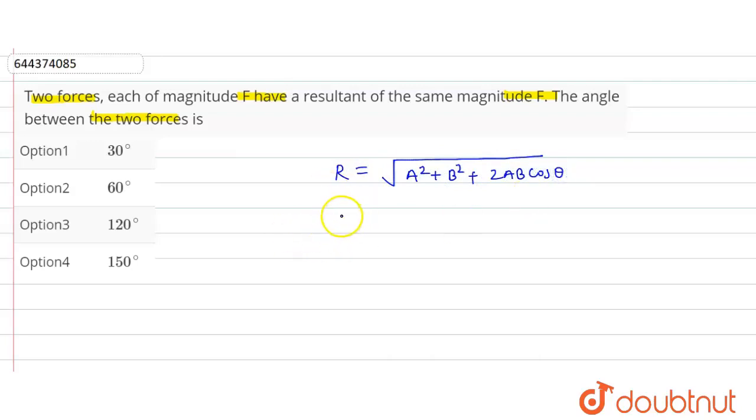Now here, the resultant is given as F, and the two vectors are each F and F, so this will be F = √(F² + F² + 2F·F cos θ), which equals √(2F² + 2F² cos θ).